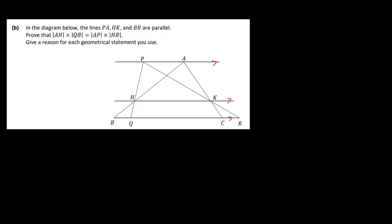Prove that AH times QB, so AH times QB this one here, is equal to AP which is this one, times HB, which is this one here. So really we're just going to look at these two triangles here, this one and this one here.